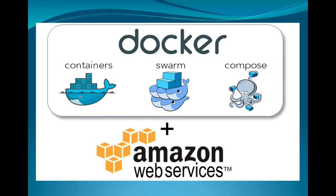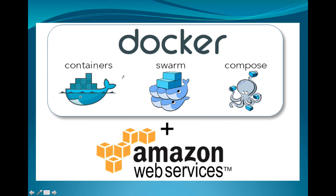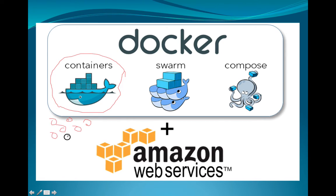Earlier, if you had to orchestrate Docker containers you would have to use technologies like Kubernetes, which is a Google technology. Using Kubernetes you could have different containers working together, but the problem was that Kubernetes itself is very complex and hard to understand. You also needed service discovery tools like etcd, Consul, and Zookeeper, which made the entire ecosystem very complex.